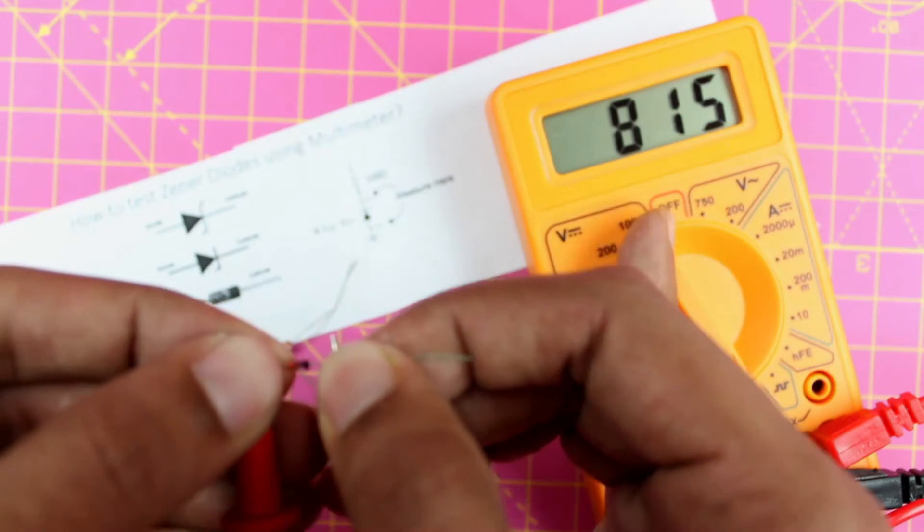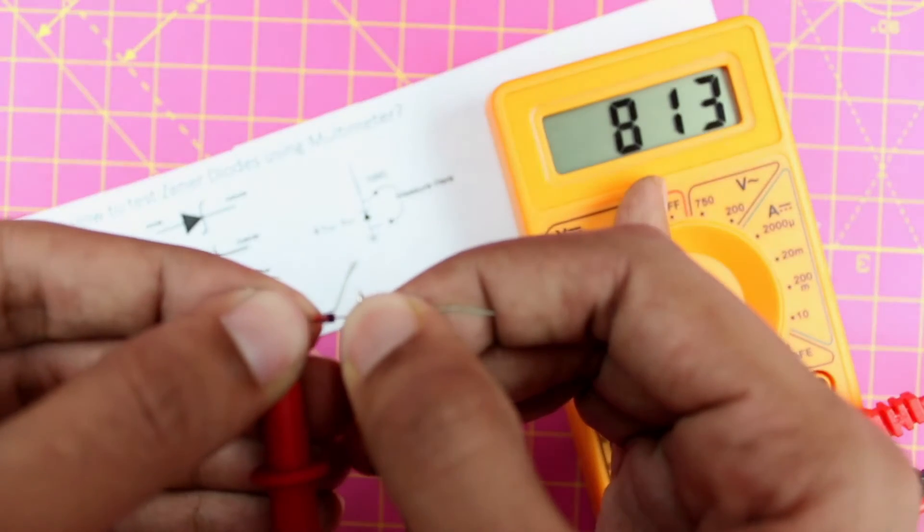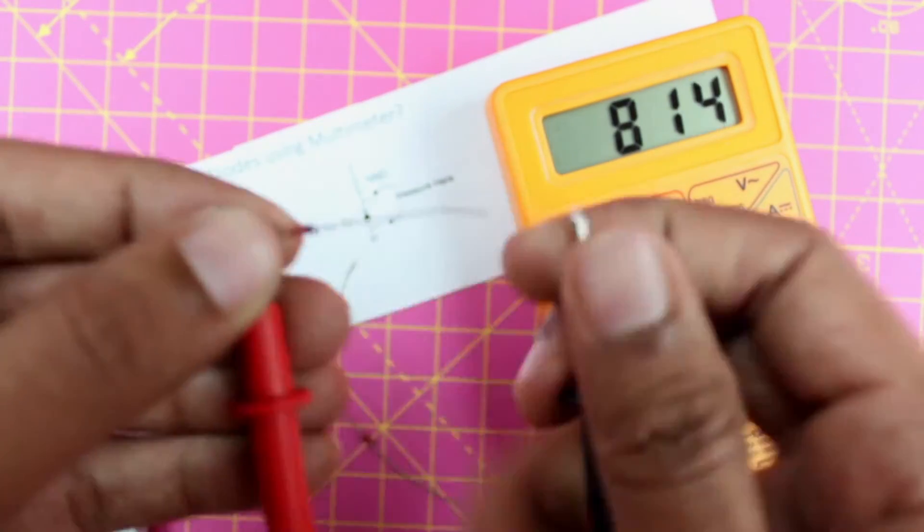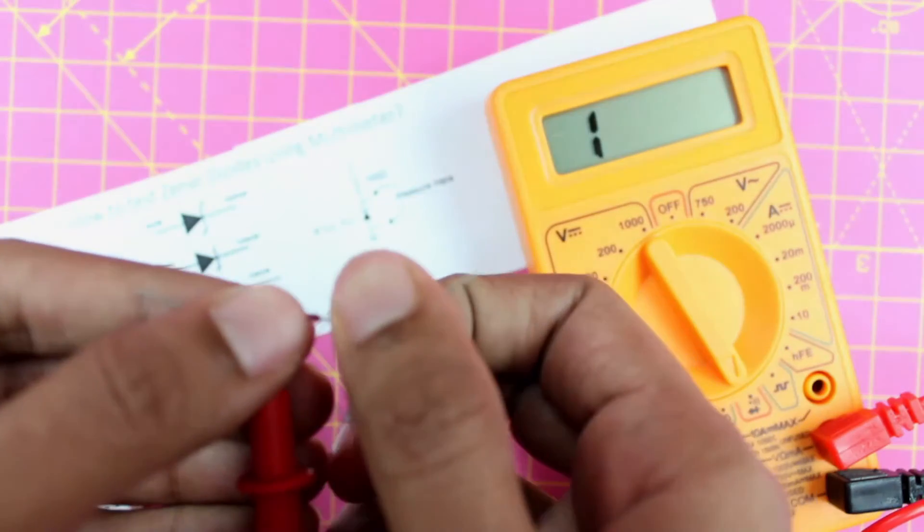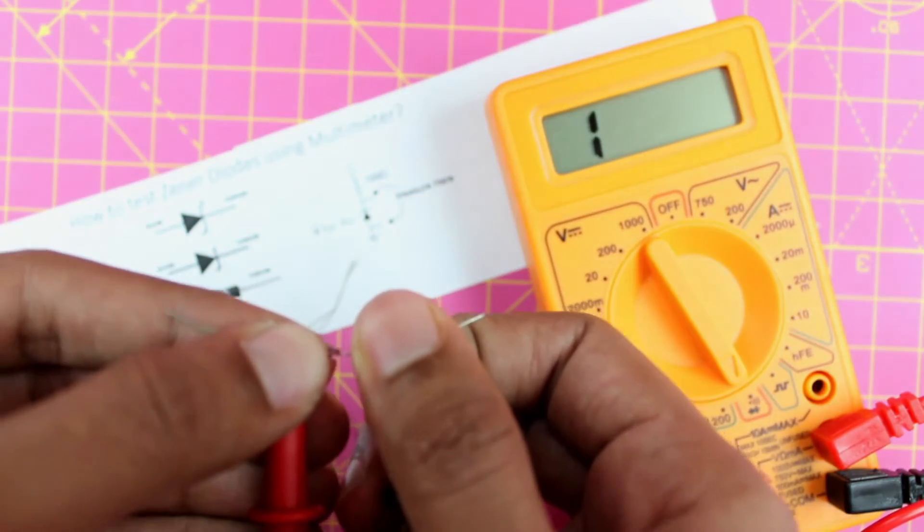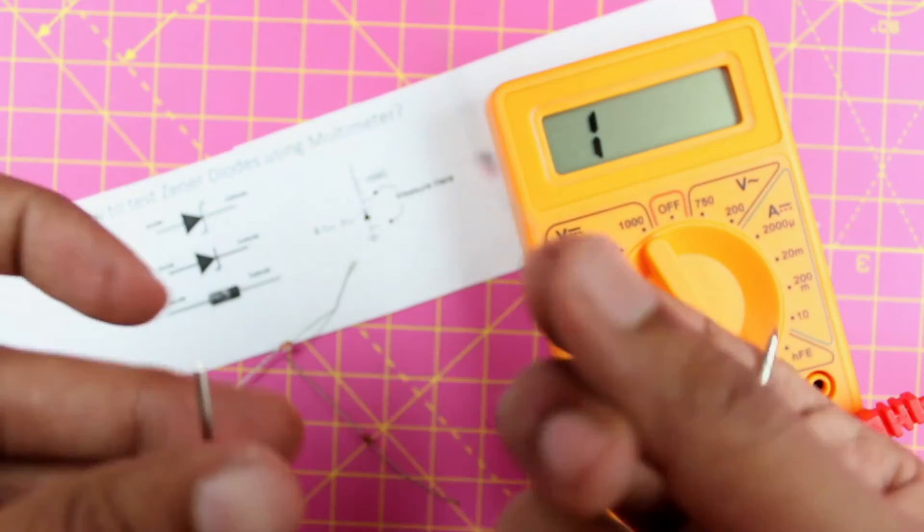When you do that you will notice a voltage drop. The voltage drop here is 0.8 volt and when you reverse the polarity you will see that it does not give any voltage drop at all. This means that this zener diode is working perfectly.